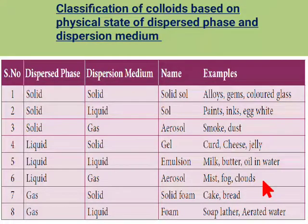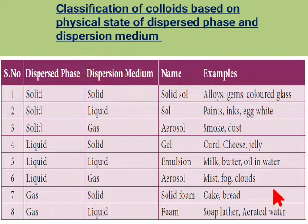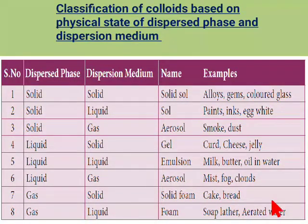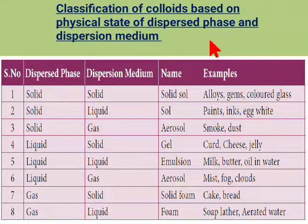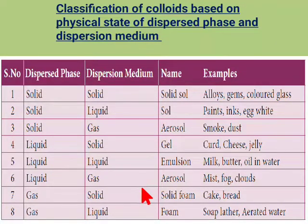Gas in solid is called solid foam. Examples include cake and bread. Gas in liquid is called foam. Examples include soap lather and aerated water. These are the classifications of colloids based on the physical state of the dispersed phase and dispersion medium.